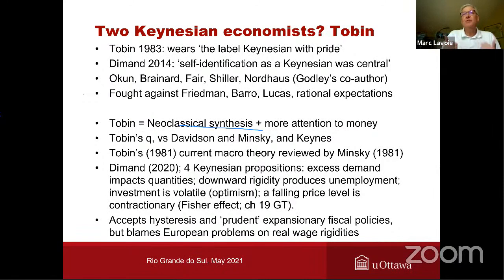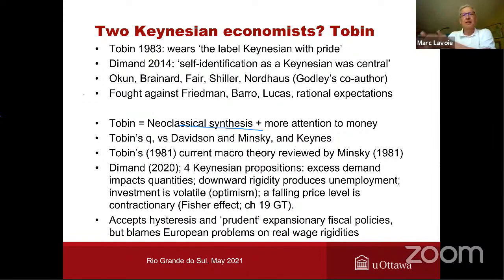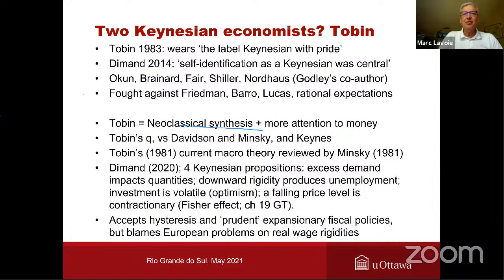These people are all considered today to be representatives of Keynesian economics and are really much closer to the Keynesian side. When I saw Tobin in 1981 making his presentation at Carleton University, he was criticizing Milton Friedman, Barro, Lucas, new classical economics, and rational expectations. So he was on the Keynesian side, for sure. On the other hand, I think it's best to understand Tobin as being part of the neoclassical synthesis, just like Solow or Samuelson. But the main difference is that he paid a lot more attention to money than did people like Solow or Samuelson.